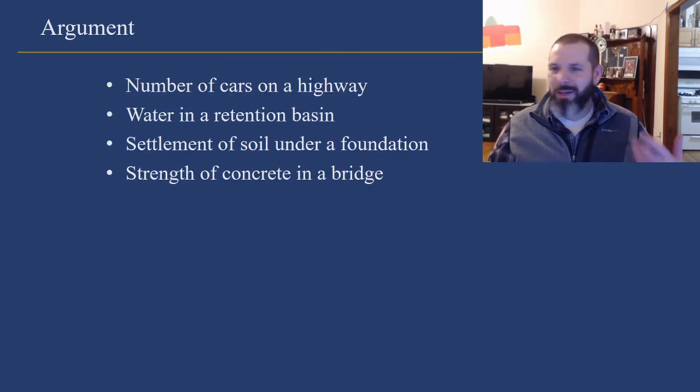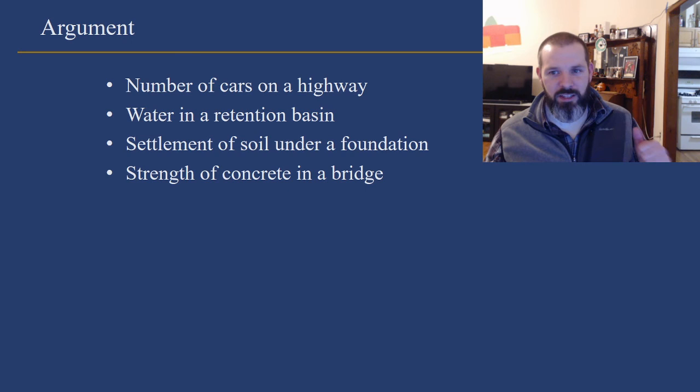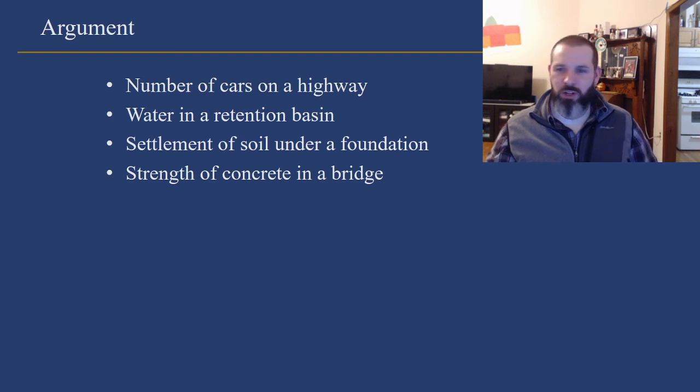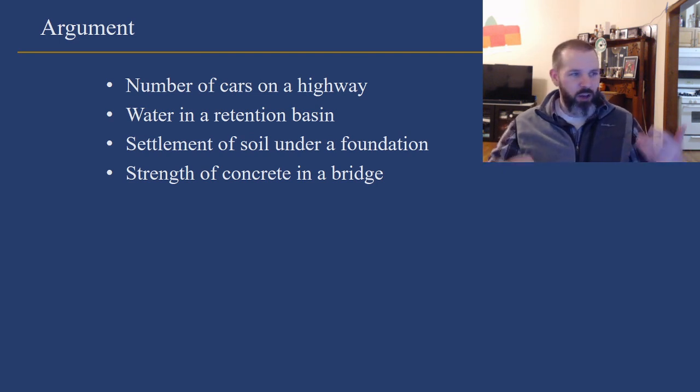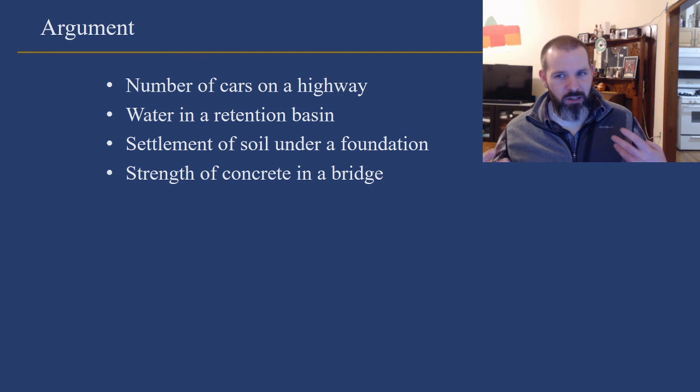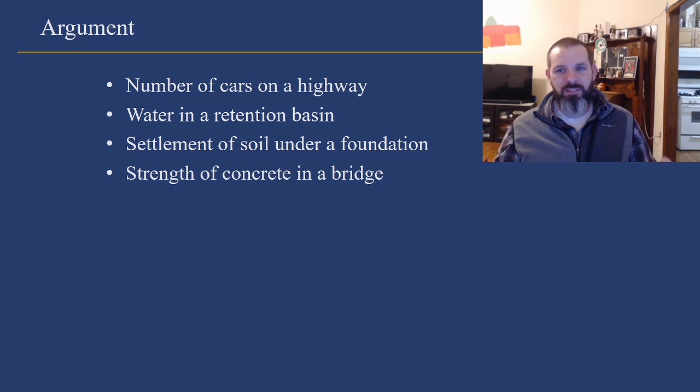Now, if apples and pies don't tickle your fancy and you're interested in more engineering things, this same idea about apples and pies can be extended to number of cars on a highway, water in a retention basin, settlement of soil under a foundation, strength of concrete in a bridge. We need to be able to handle the fact that all of these things, the number of cars, the amount of water, the settlement of soil and the strength of concrete are not deterministic constants. They're random. And we need to be able to incorporate this randomness into our designs so that we can be safe. So all of civil engineering basically runs on statistics and probability. It's just that we don't talk about it very much. But that's why it's important that you have this class now.